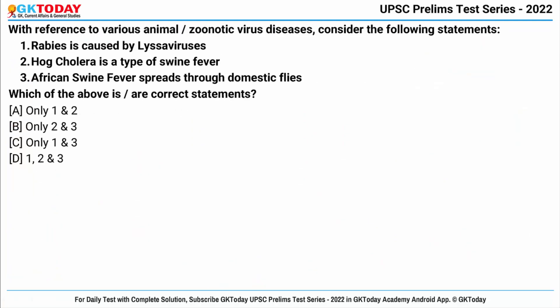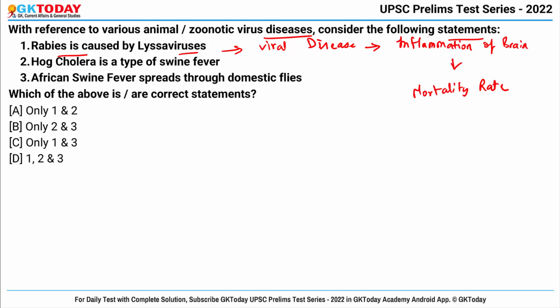Next question: with reference to various animal zoonotic virus diseases, consider the following statements. Statement one says Rabies is caused by Lyssaviruses. Rabies is a viral disease that causes inflammation of the brain, has a very high mortality rate once symptoms appear, and is indeed caused by Lyssaviruses. This is correct.